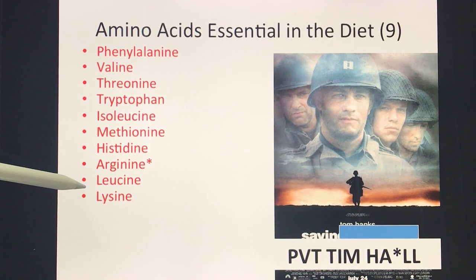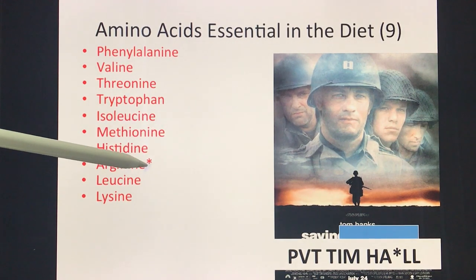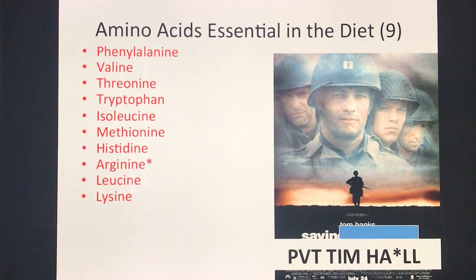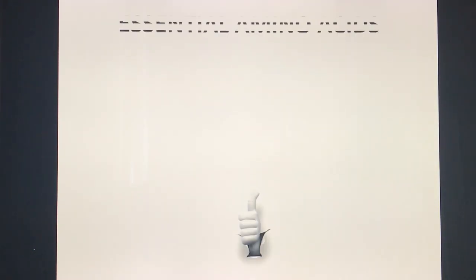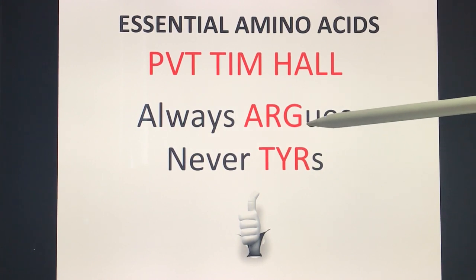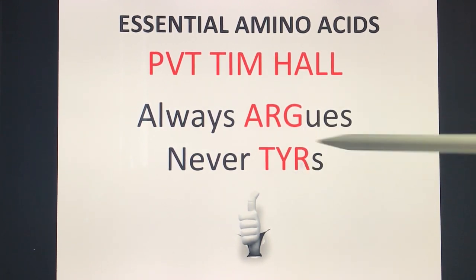Leucine and Lysine are the only purely ketogenic amino acids. Note that Arginine has an asterisk in the mnemonic — because multiple amino acids start with 'A,' just remember it is Arginine. The reminder: 'Private Tim Hall always argues and never tires' — meaning the essential amino acids always include Arginine but never Tyrosine.